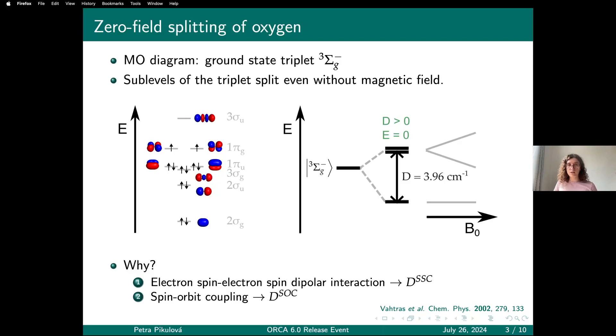When you have a spin triplet, you expect that you have three sublevels that are degenerate. But actually there are some small interactions that originate from relativistic treatment that make the three sublevels of this triplet split in energy even before you apply the external magnetic field. In oxygen, the D parameter describes how much the lower level splits from the upper two levels. The upper two levels remain degenerate because the E parameter is zero.